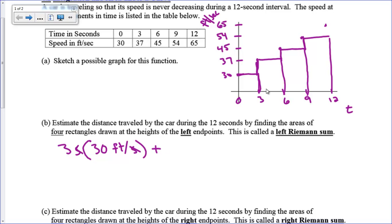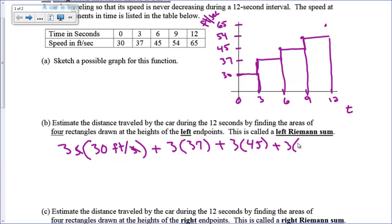So we add the rectangles: from 3 to 6, width of 3 and height of 37. The next rectangle is 3 times 45. And the last rectangle is 3 times 54. That's the left Riemann sum. With a calculator you could compute it, but that expression is the left Riemann sum.